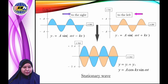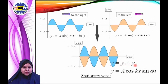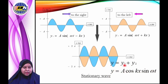The equation for the stationary wave is Y = Y1 + Y2, which gives Y = A cos(kx) sin(ωt). You can learn how to derive this equation in the tutorial class. It represents two amplitudes combined from the two progressive waves.